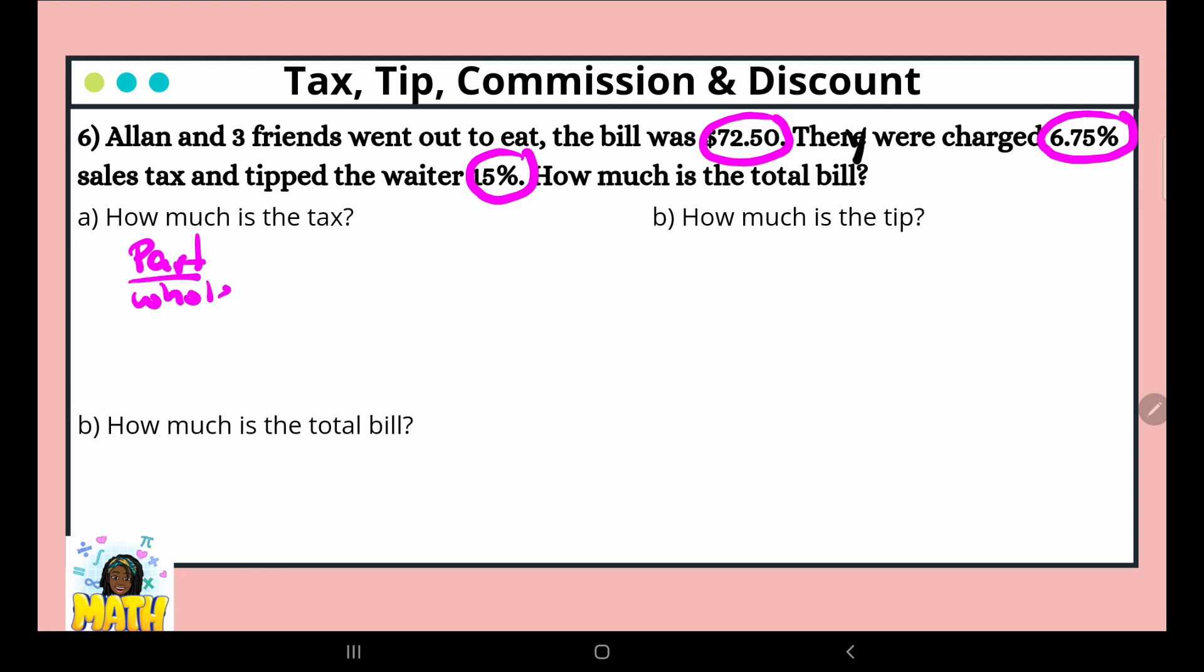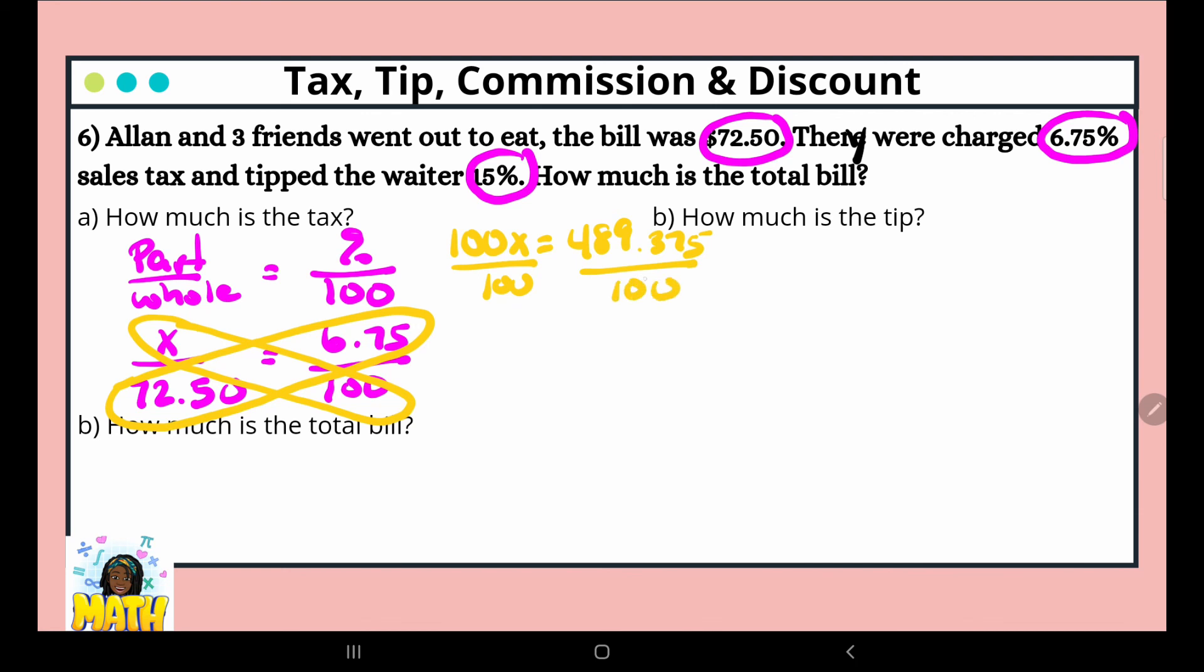So part over whole equals percent over 100. And we do these one at a time. We're looking for the part, the whole is $72.50, and the first percent we're working with is 6.75 over 100. We cross multiply: x times 100 and 72.50 times 6.75. So we have 100x equals 489.375, and then we're going to divide both sides by 100. So that gives us 4.89375. And because it's money, we need to round. So it's $4.89. So that's the amount of the tax.